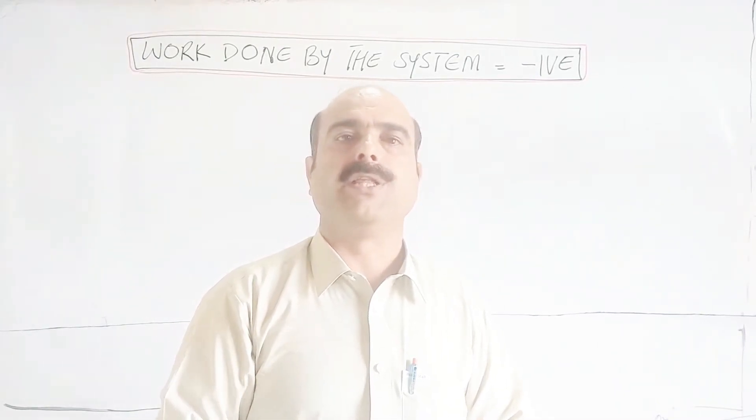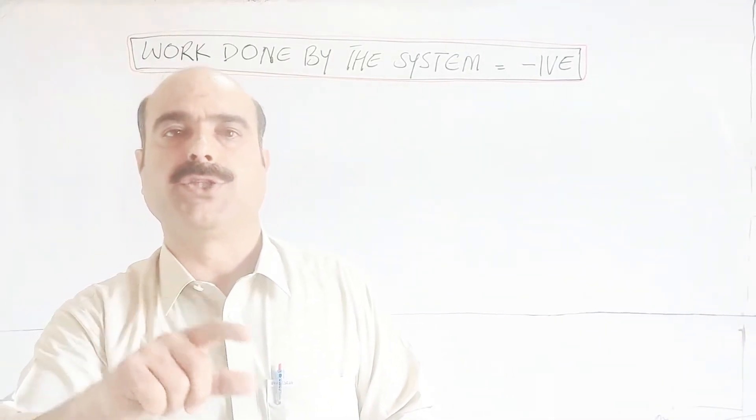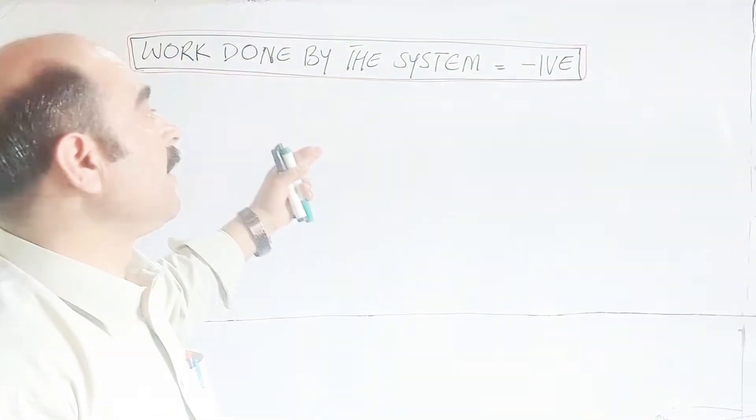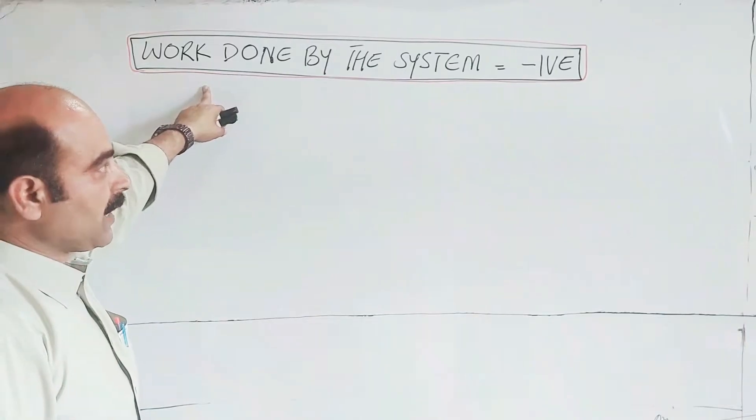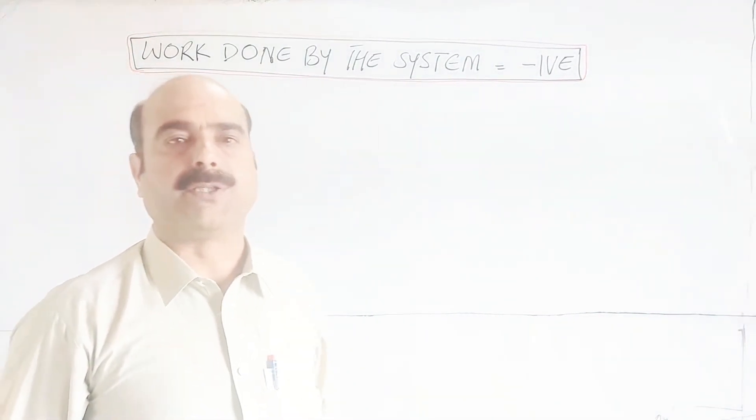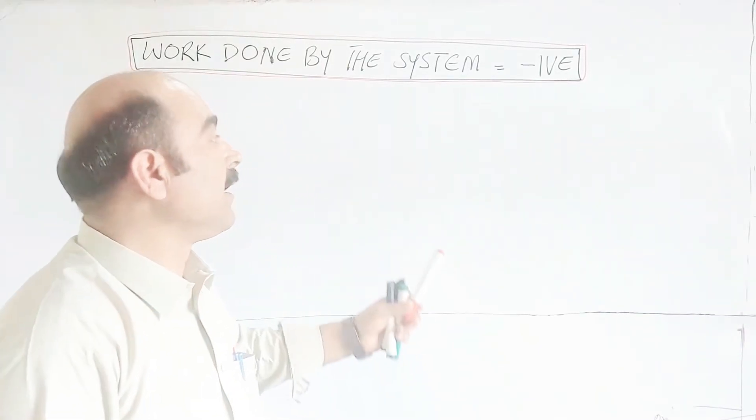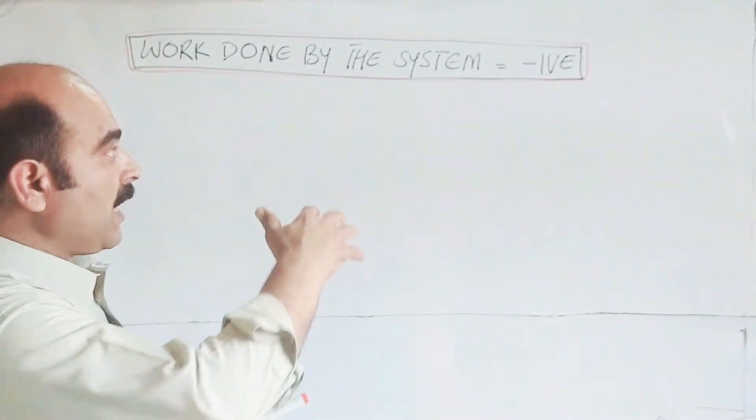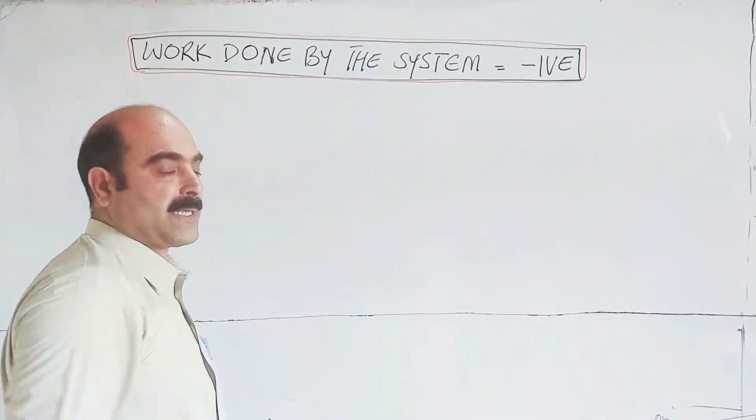In your exercise question number three, it asks: work done has positive and negative values, explain. Work done has positive value and negative value. Positive when work is done on the system, and negative when work is done by the system.